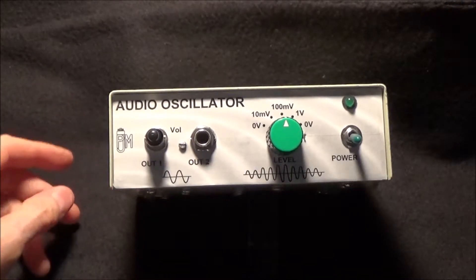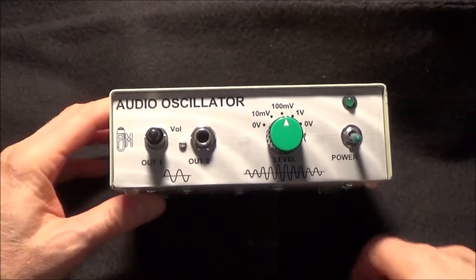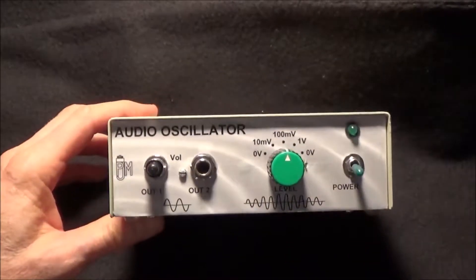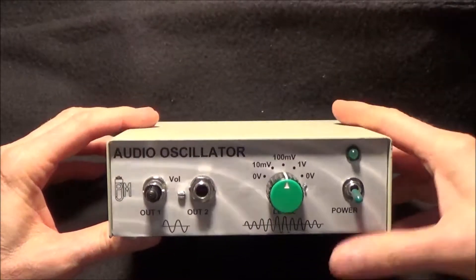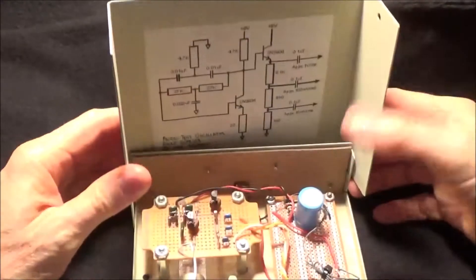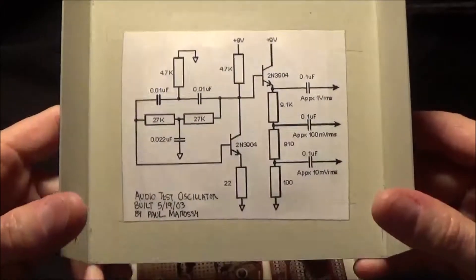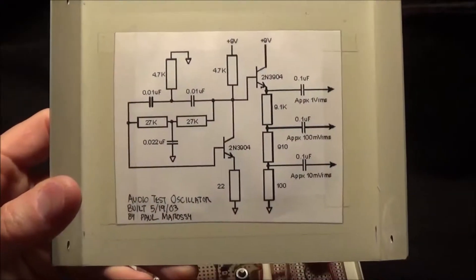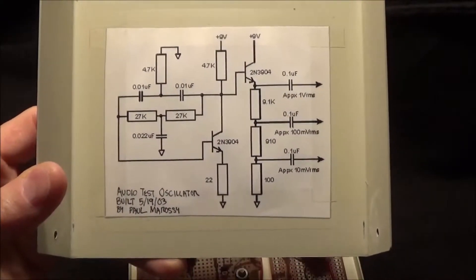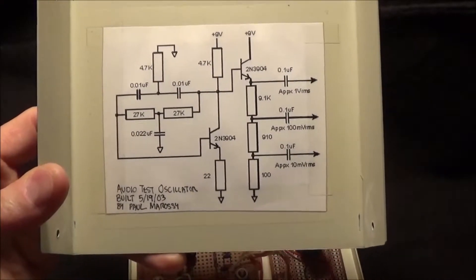The first place where I discovered a simple audio oscillator circuit was on RG Keene's website, geofx.com. This was his twin T oscillator that he had up there. It's not on his website anymore for some reason.